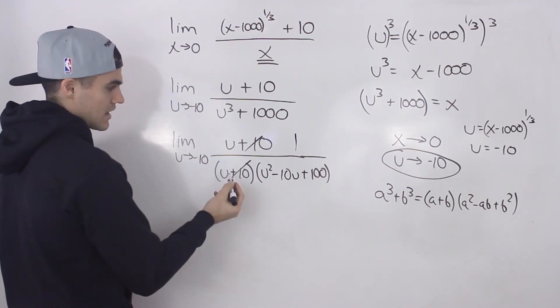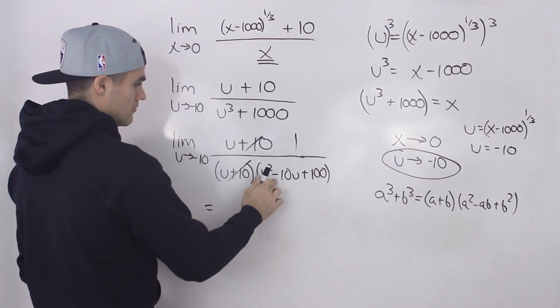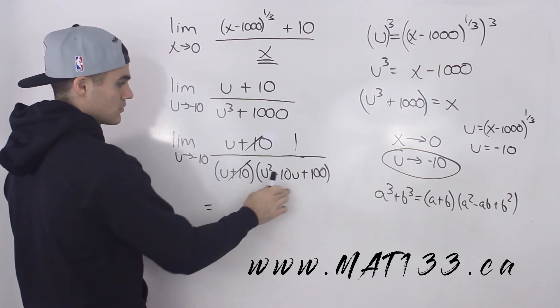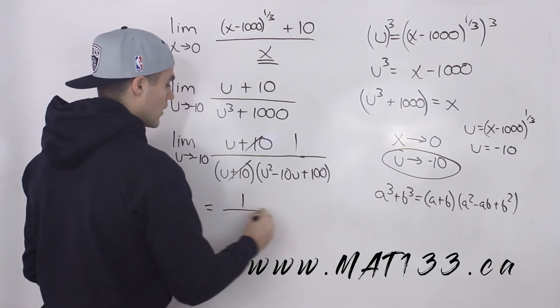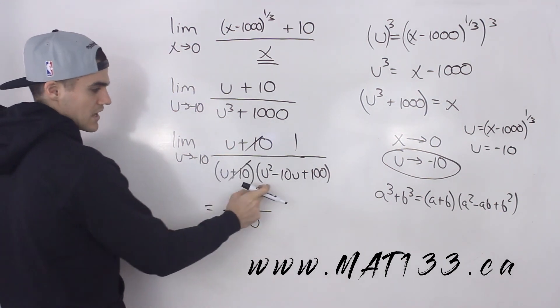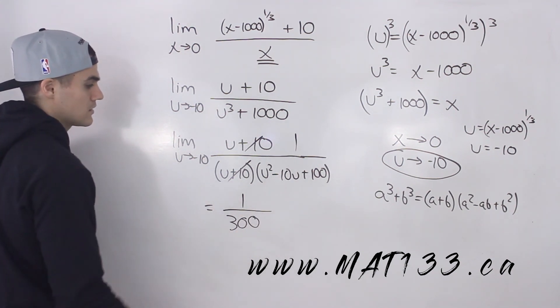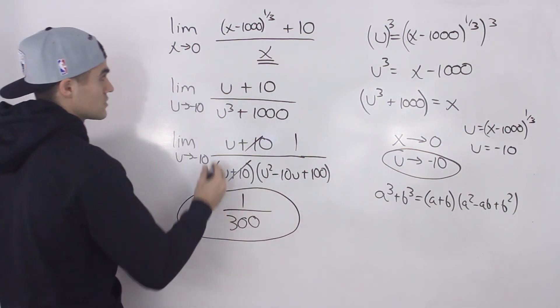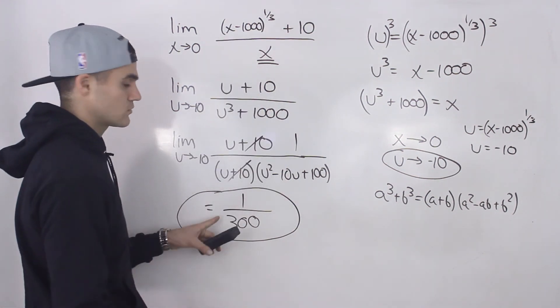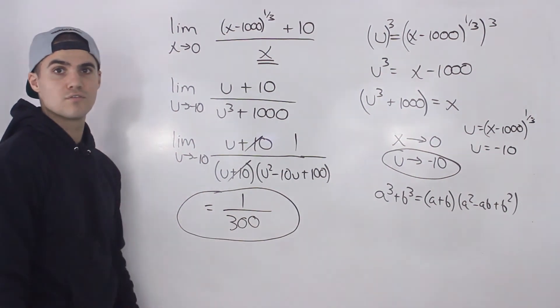So if we plug in negative 10 for u, we would have 100 minus 10 times negative 10, which gives us plus 100, so that would be plus 200 plus 100, giving us 1 over 300. Basically, if you plug in negative 10 for the u value in this bracket, you would end up with 300. And so that is your final answer. The limit of this function here is equal to 1 over 300, and we did it with the change of variable strategy.